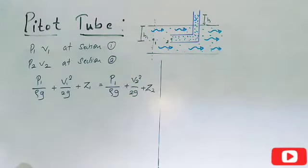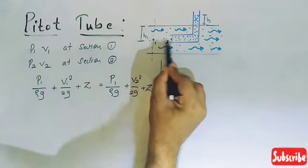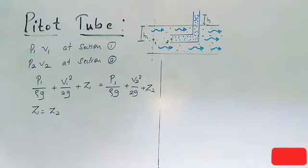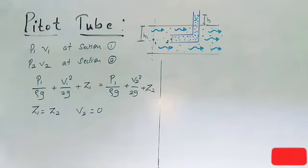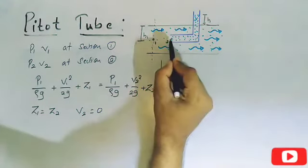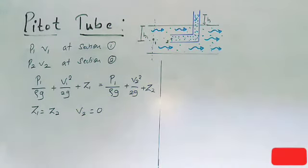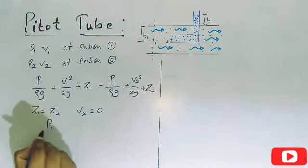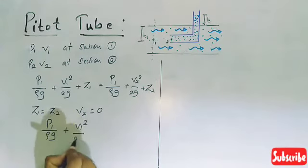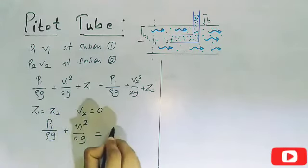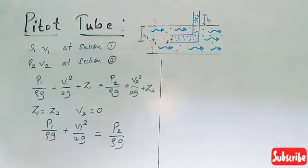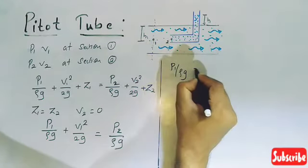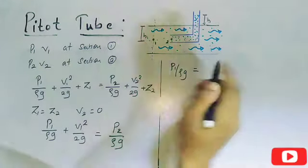From the figure, both points are on the same horizontal line, so z1 equals z2, and these terms cancel. From the principle of the pitot tube, the velocity at section 2 becomes zero, so v2 = 0. Substituting these assumptions, the equation simplifies to: p1/ρg + v1²/2g = p2/ρg. We know that p1/ρg is the pressure head at section 1, which equals h1.